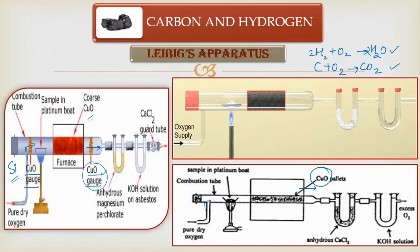In all three versions of the apparatus, you have absorption tubes. You need to get the H₂O and CO₂ absorbed. In the first tube, you can have anhydrous calcium chloride — or anhydrous magnesium perchlorate — which are dehydrating agents that absorb moisture. As soon as the reaction takes place and gases exit the combustion chamber, the water molecule will be absorbed in this first tube. Then the gas passes through the next chamber, which contains KOH. KOH absorbs carbon dioxide gas.